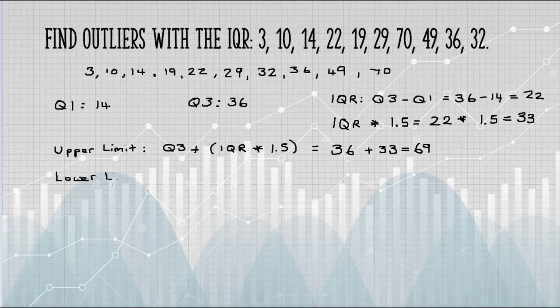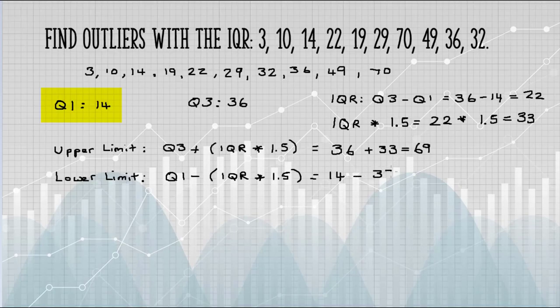The lower limit is Q1 minus that IQR times 1.5. Q1 was 14. Minus 33 gives us minus 19.